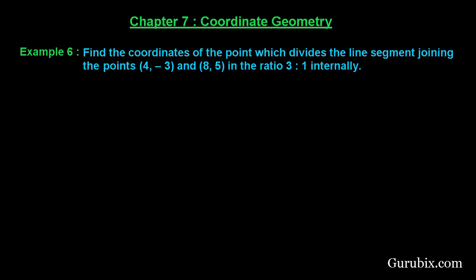Welcome, let us solve example number 6 of chapter 7. The example says find the coordinates of the point which divides the line segment joining the points (4, -3) and (8, 5) in the ratio of 3:1 internally.